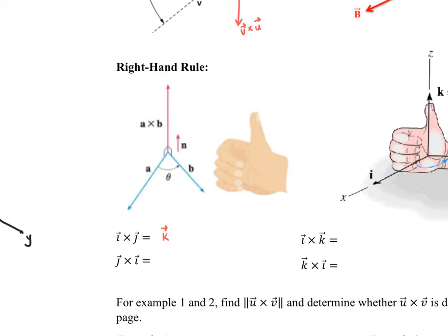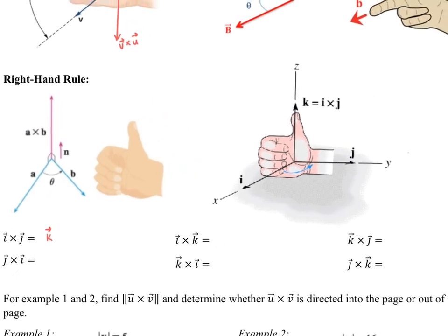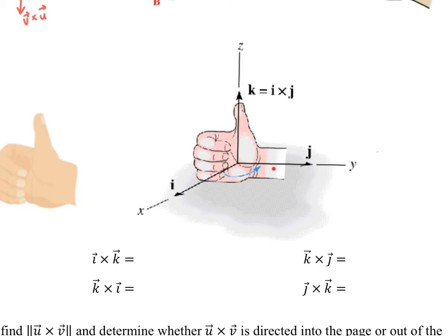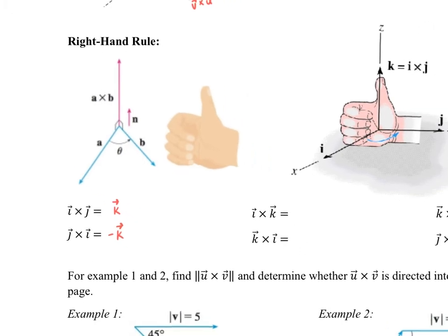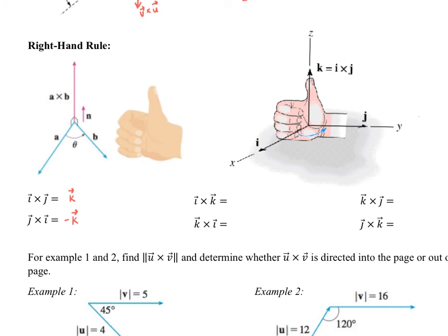If you do the opposite — J cross I — line your fingers up with positive J and curl towards I. If you can successfully manipulate your hand in that position, your thumb would be pointing in the direction of negative K. So J cross I equals negative K. I'd like you to pause the video and try the other four cross products on your own using the right-hand rule before I give you the answers.